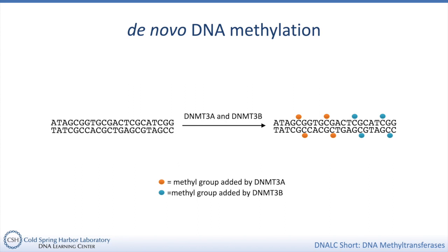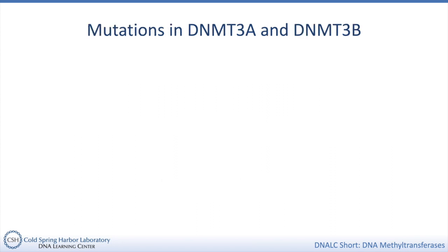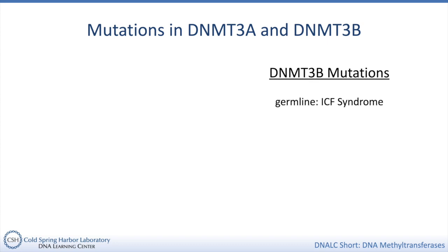That these two de novo DNA methyltransferases have different sequence preferences is also reflected in what happens when they are mutated. DNMT3B mutations are associated with ICF syndrome, which stands for immunodeficiency centromeric instability facial anomalies syndrome. This is a very rare autosomal recessive syndrome which can be caused by mutations in DNMT3B or one of several other genes. People with ICF syndrome have hypomethylation — less methylation than expected — and in particular they have hypomethylated pericentromeric satellites, bits of non-coding repetitive DNA near the centromere.